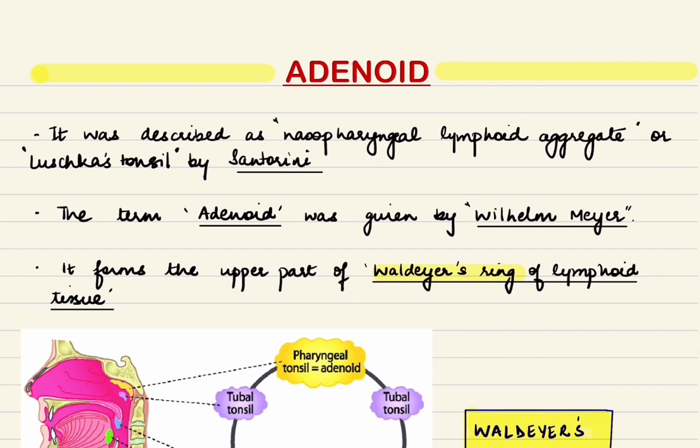As discussed in the anatomy of nasopharynx lecture, the adenoid is found at the roof and posterior wall of the nasopharynx, and it forms the upper part of Waldeyer's ring of lymphoid tissue.